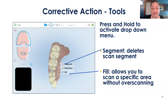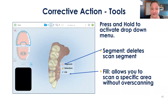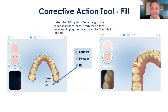While scanning, if you press and hold your finger on the screen you can activate the fill tool, which allows you to scan a specific void — it will highlight it. You also have the option to hit segment to delete that scan segment entirely. If a segment isn't looking great, deleting it and starting over is a valid option. The fill tool visually highlights voids so you can quickly go in and capture that missing data.